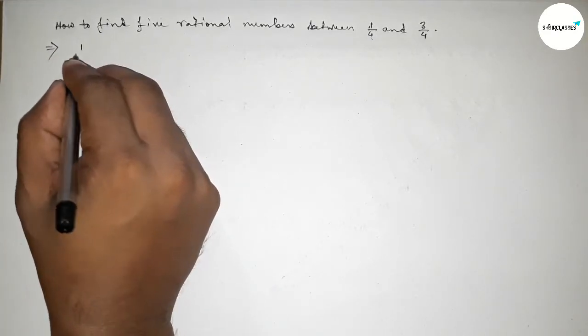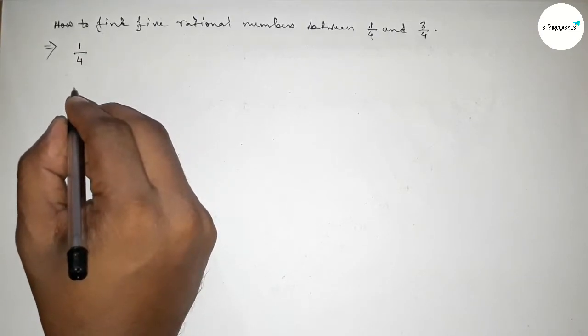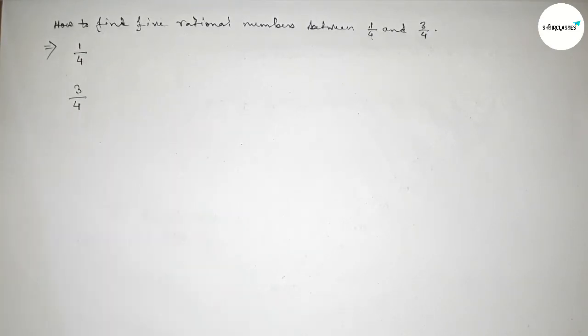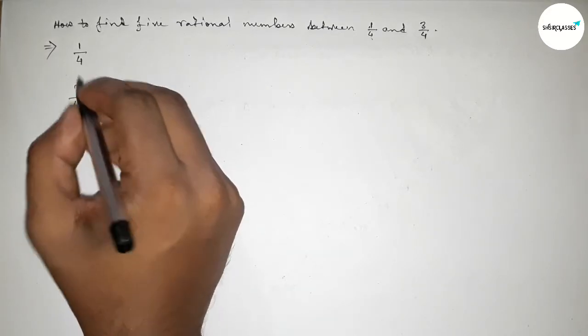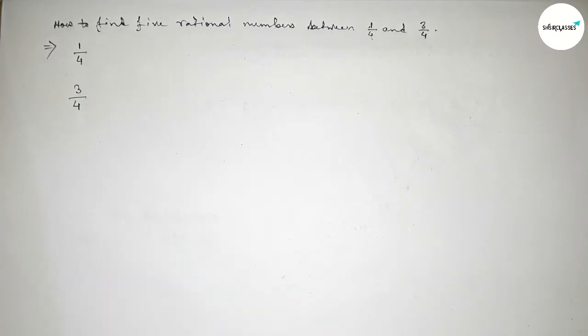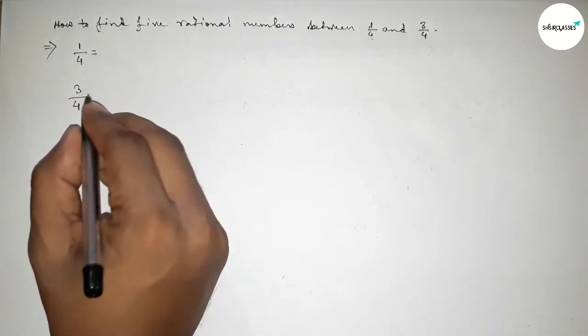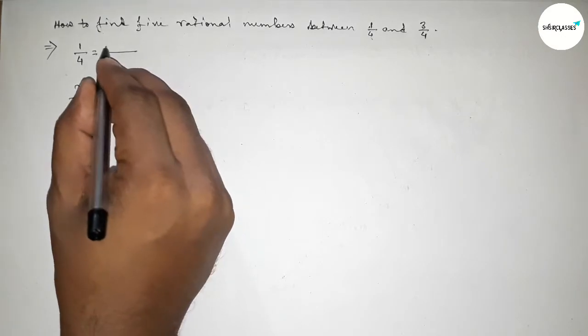Here given two fractions: 1 over 4 and 3 over 4. The denominators of both fractions are the same. Now I'm going to multiply both fractions up and down by 3 to get an equivalent fraction of both numbers.